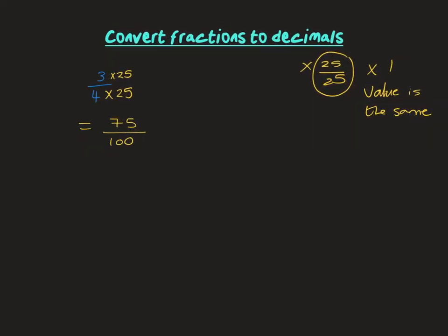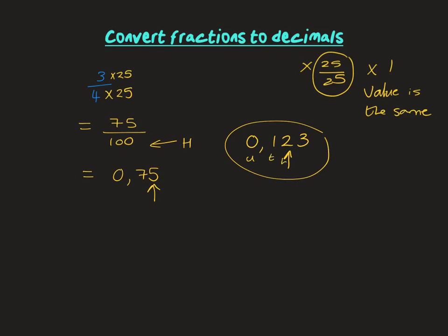So the fraction becomes 75 over 100, which is the same value as 3/4 — just a different look. Now we can use our place value positions: units, tenths, hundredths, thousandths. Since we have a hundred at the bottom, we need to make sure our 5 lands in the hundredths column, so we position the digits correctly in units, tenths, hundredths.